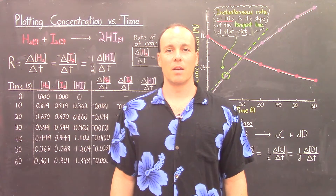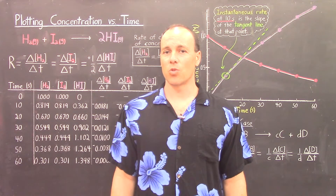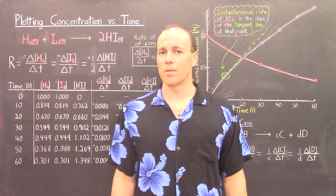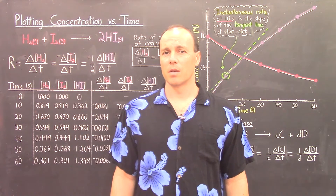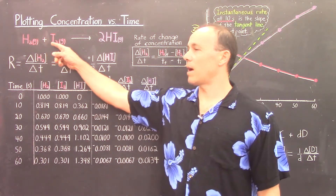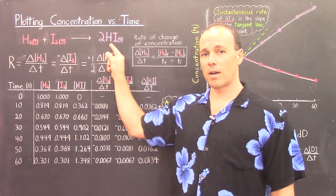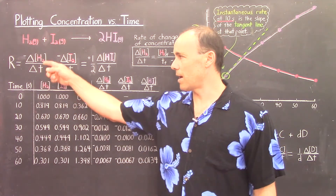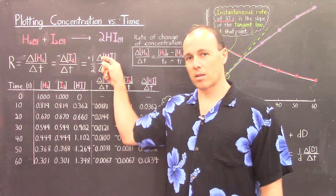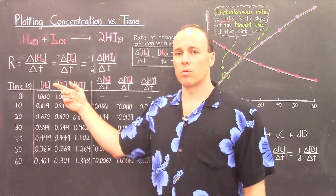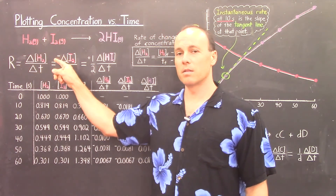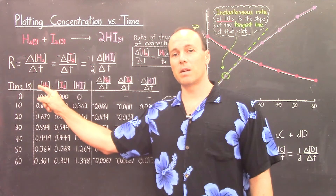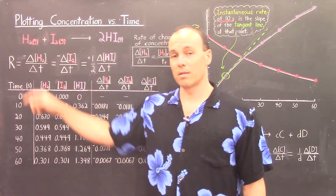To gain a better understanding of the relation between rate, concentration, and time, let's look at some more detailed experimental data and plot concentration versus time on a graph. Using the same reaction, hydrogen reacts with iodine to form product HI. Recall that if we precede the reactant rates by negative signs and the product rate by positive one half — because of the coefficient 2 — these relations become equal, and we can call that the rate of the reaction.